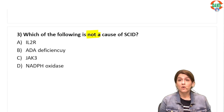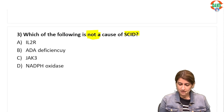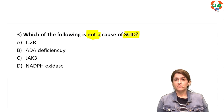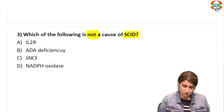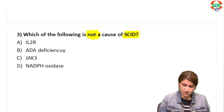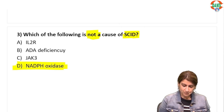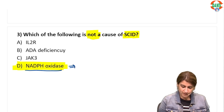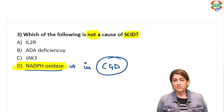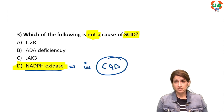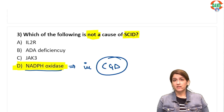Question three: which of the following is NOT a cause of SCID — severe combined immunodeficiency syndrome? IL-2, ADA, and JAG3 are all causes. NADPH oxidase is not a cause of SCID because NADPH oxidase defect is seen in patients of chronic granulomatous disease (CGD).